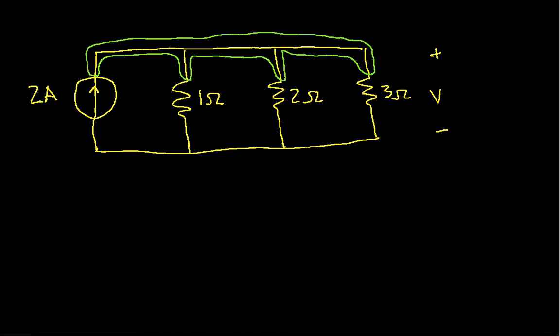The idea is because everything inside the green is connected by wires, the voltage at any point, or the voltage drop between any two points inside the green, is zero.